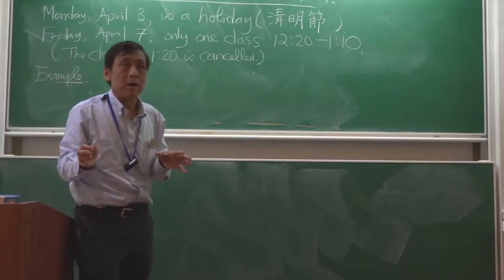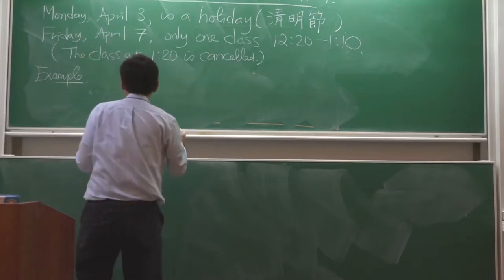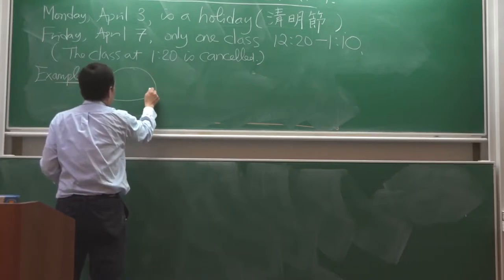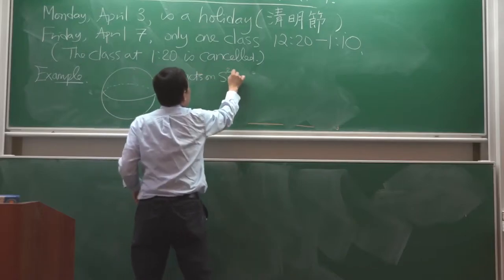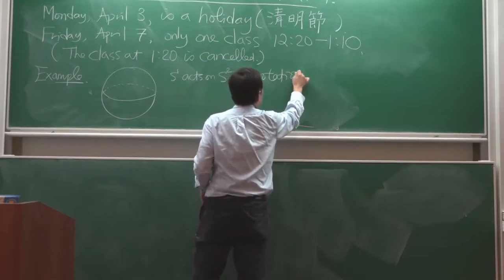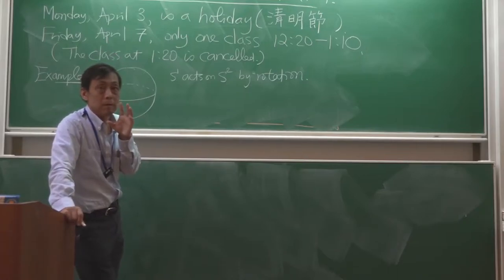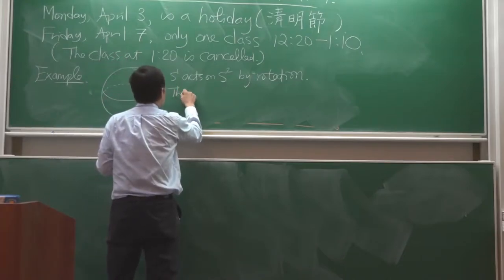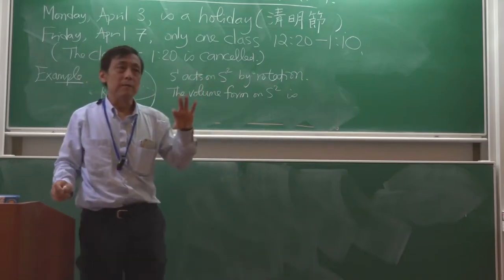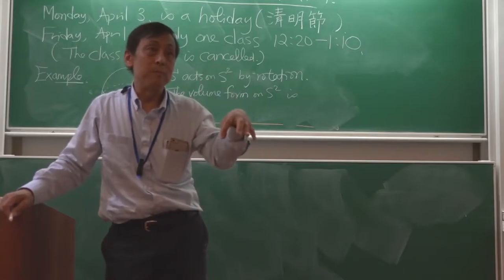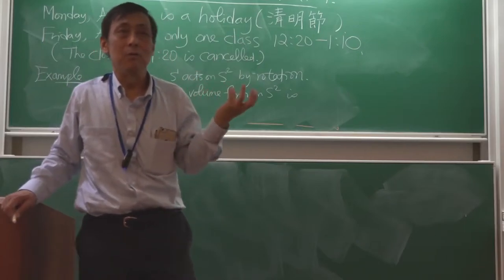Now we know what the Cartan model for a circle action looks like. Let's work it out for our standard example of S¹ acting on S² by rotation about the z-axis. So let's start with the volume form on S². What is the volume form on S²? It's the two-form on S² which, when you integrate, gives you the surface area of the sphere. Do you know the formula for the volume form?